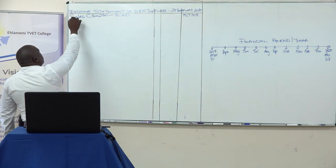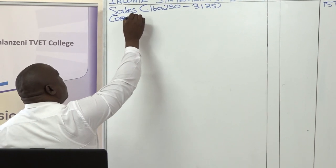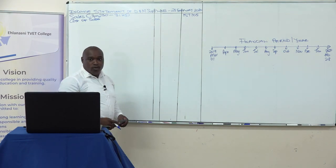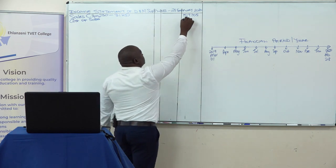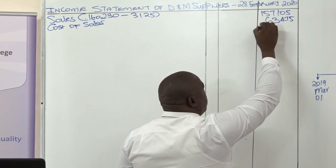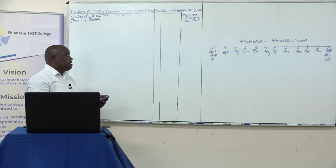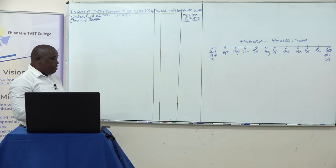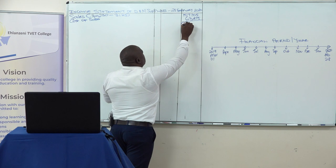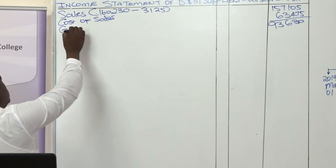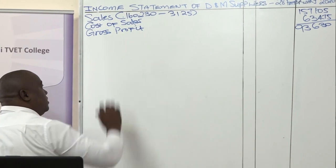Thereafter, we write the cost of sales, which needs to be subtracted from the net sales amount. Our cost of sales is 63,475. From net sales of 157,105 we subtract 63,475, and we are left with 93,630, which is our gross profit for the year.